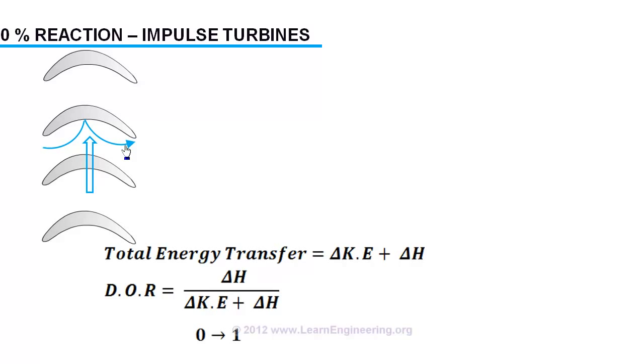We know along the blade enthalpy doesn't change. Along with enthalpy temperature will also remain same, because enthalpy is a direct function of temperature assuming steam as an ideal gas. There will be slight drop in pressure but you can almost assume pressure is same across the rotor. The only quantity which changes here is the velocity.